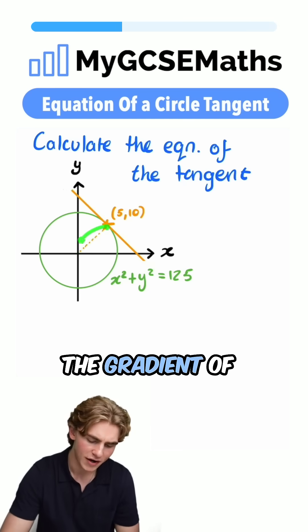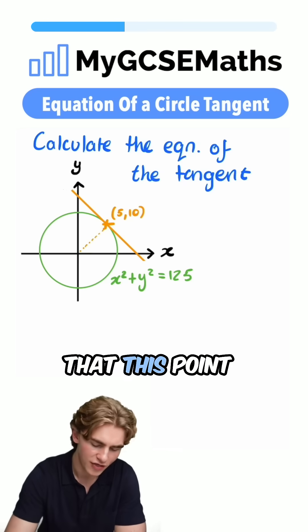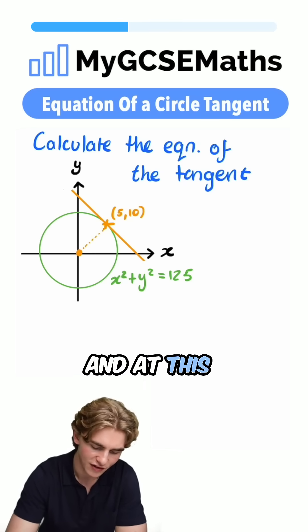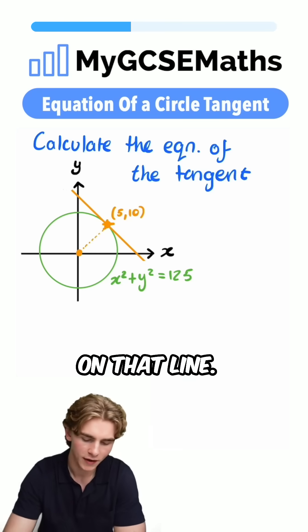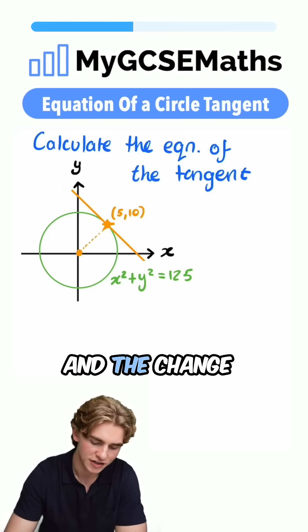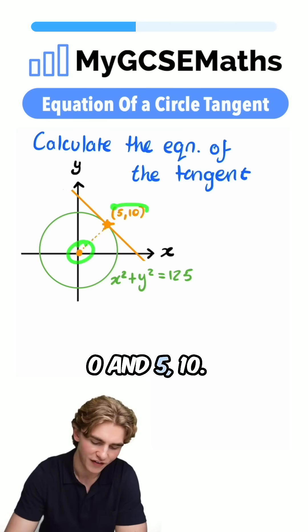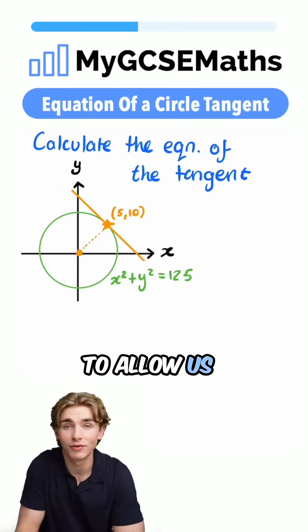So how are we going to find the gradient of this line here? Well, we know that the point (0, 0) is on that line, and the point (5, 10) is on that line. We can find the change in y and the change in x between (0, 0) and (5, 10). And that's going to allow us to find the gradient.